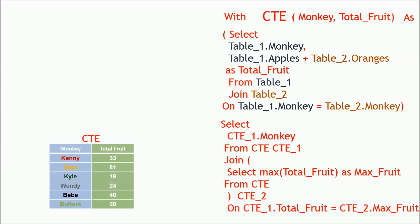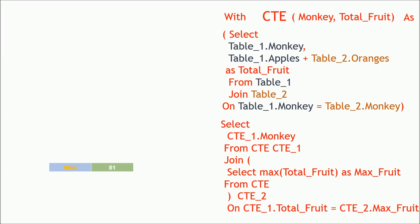Now we can simply reference that CTE several times in our select statement. With 'CTE monkey_fruit AS' then our little table defined, we select monkey from the CTE — I gave it a nickname CTE_1. Then: JOIN (SELECT MAX(total_fruit) AS max_fruit FROM CTE) as CTE_2. Notice that is a subquery, but it's a much shorter one now that we're just referencing that common table expression. ON CTE_1, we're joining on total_fruit — whichever monkey has the max fruit, that's who we want. We pull out that max fruit value, which is 81, join it back to our table, and we realize it's Stan again — he's the one eating the most fruit. So that is a CTE in a nutshell.